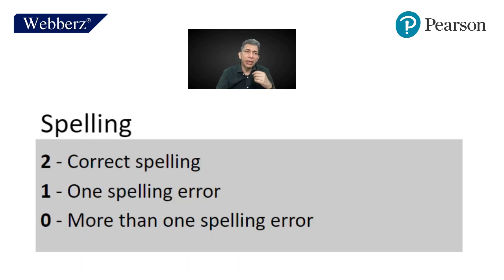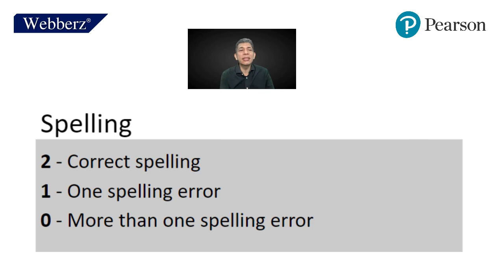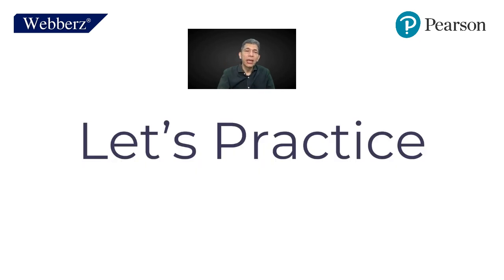For spelling, you get two if all spellings are correct. You get one if there is one spelling error. You get zero if there are more than one spelling errors. Now let's practice — let's solve one essay.